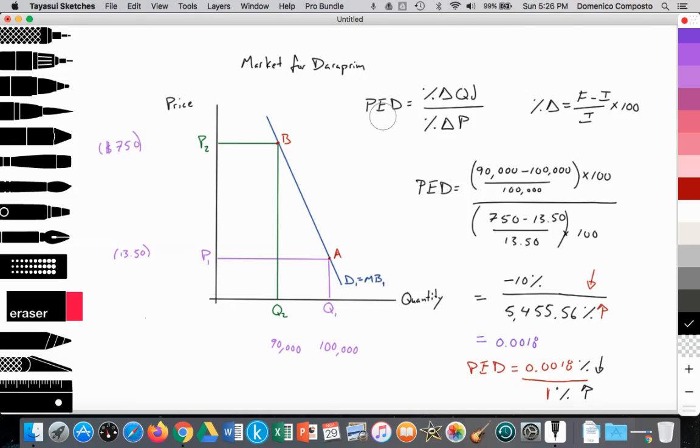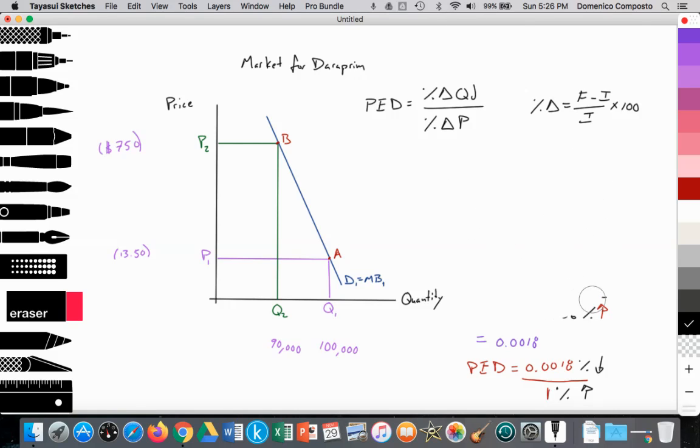So let's make some initial notes here, and then we're going to analyze this as we would for a paper exam for the IB. So we've calculated that the demand curve, D1, is very inelastic, right? It's a very inelastic demand curve.